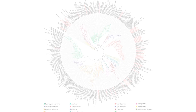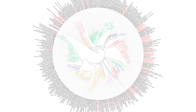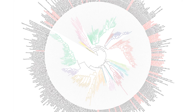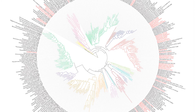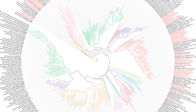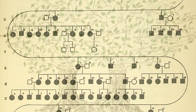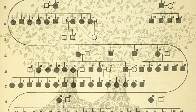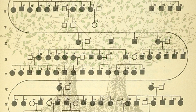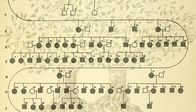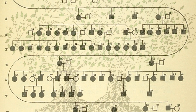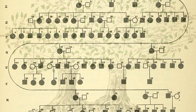A phylogenetic tree is a display of inferred evolutionary relationships between species. The idea of using a tree to display this information is familiar to anyone who has ever looked at a family tree.